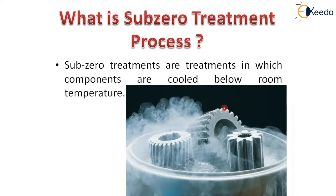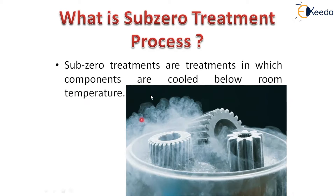In all other heat treatment processes — annealing, normalizing, finishing, or tempering — the cooling is below the lower heat temperature line but above zero degrees centigrade. But in sub-zero heat treatment, the cooling procedure goes below room temperature. The main advantage is that wear resistance can be increased, which is important in improving the life of any material.